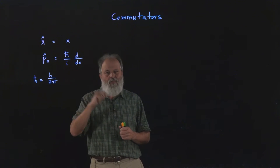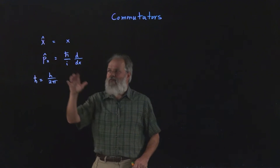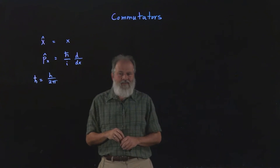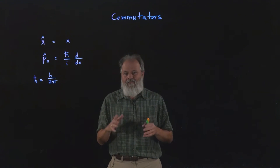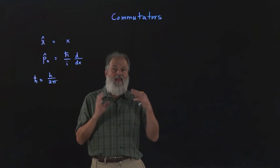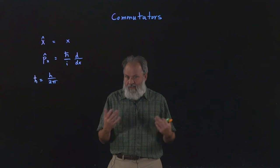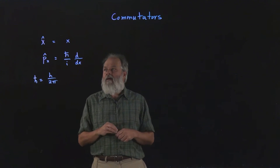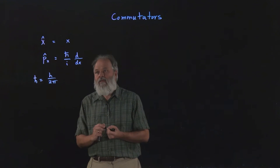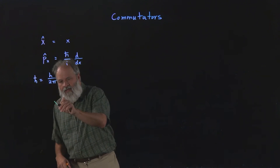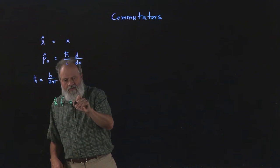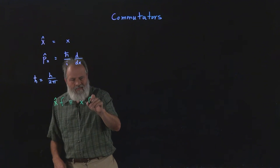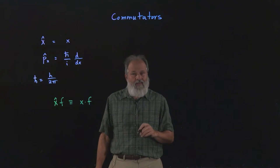So I'm going to take two operators, one of which is the position operator in quantum mechanics. Now the position operator says take the function x and multiply it by the function that you're operating on. So we'll just write down x hat applied to f is defined as x times f, in that order.